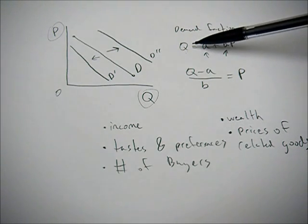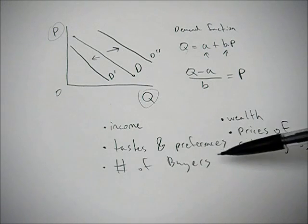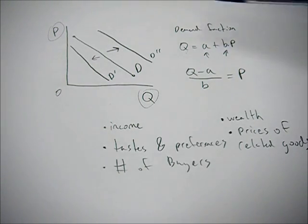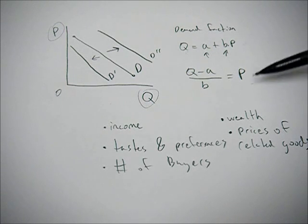So typically, we're just going to have one endogenous variable determined by the model and many, many exogenous variables. But you don't know for sure which one's going to be endogenous until you get that mathematical function.